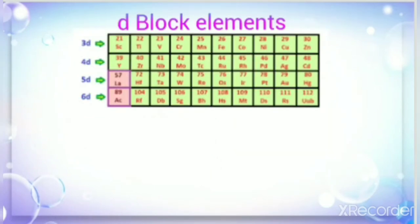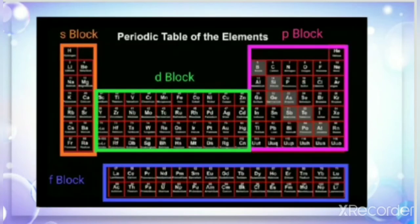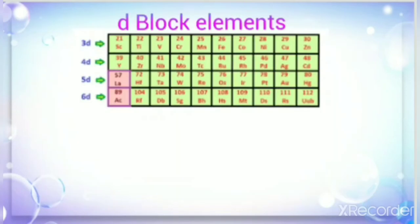Next, D block elements. In the periodic table, D block elements are found in between the S and P block, where the filling of electrons takes place in the D orbital. There are series: the 3D series, 4D series, 5D series, and 6D series — so there are four series in the D block elements.